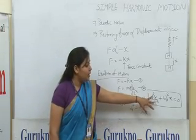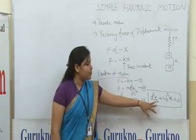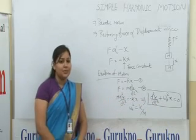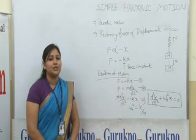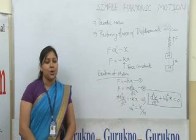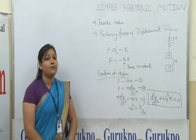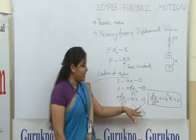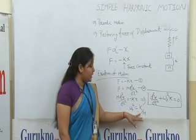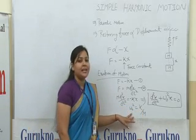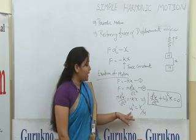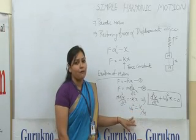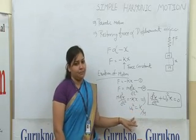On solving, we get the equation d²X/dt² plus ω₀²X equals 0. This is a second-order differential equation and is known as the equation of SHM. Here, K/M is a constant written as ω₀², where ω₀ is the angular frequency of SHM.